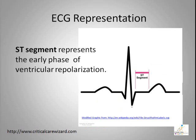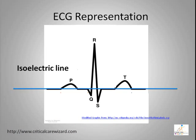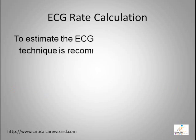The ST segment represents the early phase of ventricular repolarization. This is the actual period when the heart muscles contract. The isoelectric line represents the state of ECG polarity being neither negative nor positive.